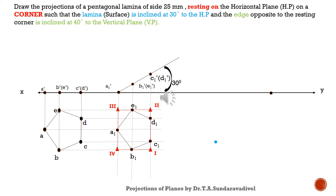Then enclose this polygon inside a box, shown here in red color — you should not use red color in your own drawing; it is only for differentiation. Give the box corners different names using Roman numerals 1, 2, 3, and 4. So the apparent shape is enclosed inside the box.